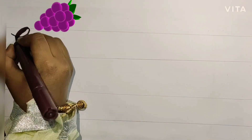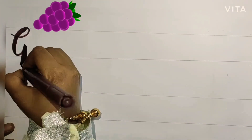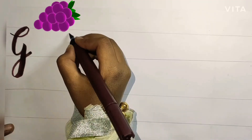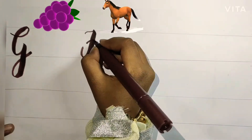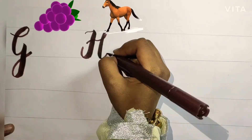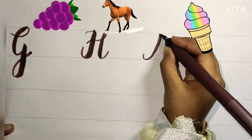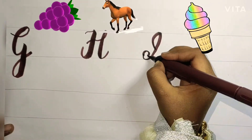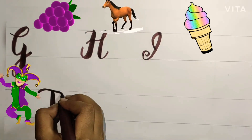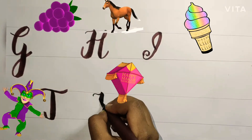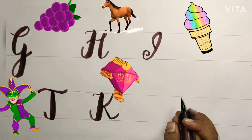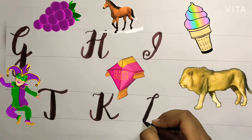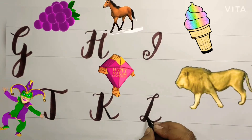G is for Grapes. H is for Horse. I is for Ice Cream. J is for Joker. K is for Kite. L is for Lion.